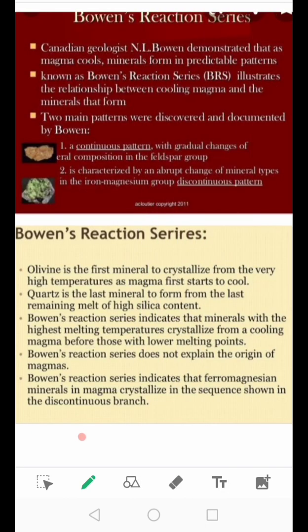Olivine is the first mineral to crystallize at very high temperatures as magma starts to cool, while quartz is the last mineral to form from the last remaining melt of high silicon content. The Bowen Reaction Series indicates that minerals with the highest melting temperatures crystallize from a cooling magma before those with lower melting points. However, the Bowen Reaction Series does not explain the origin of magma.